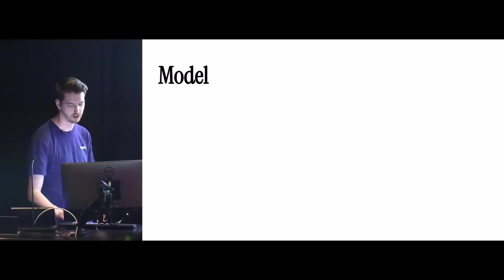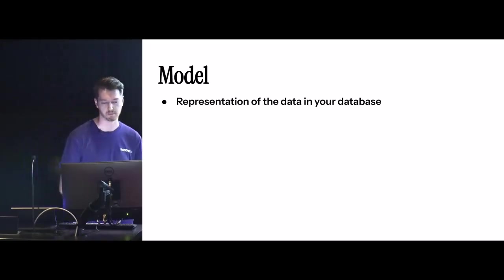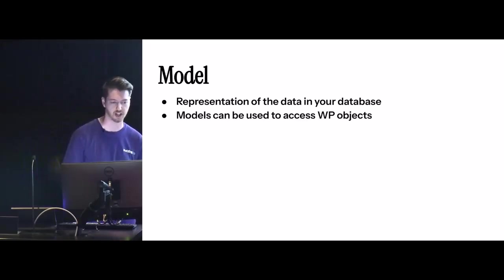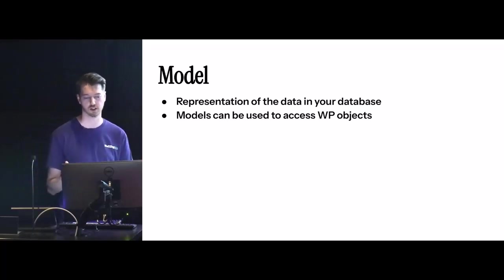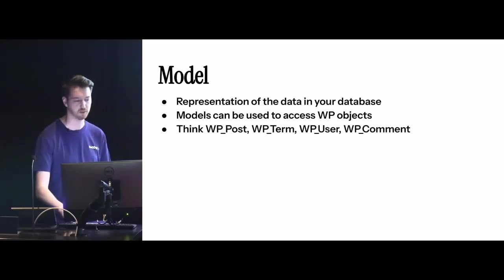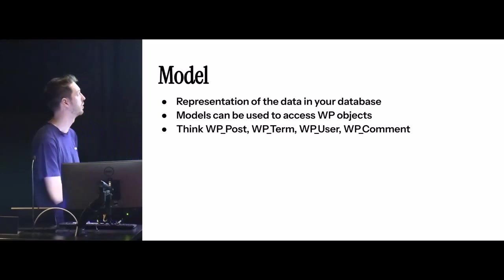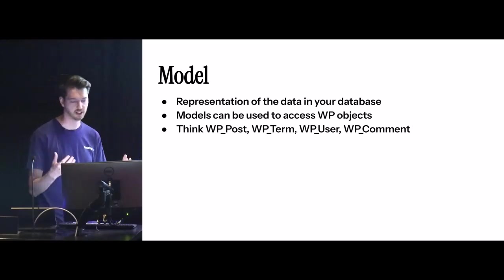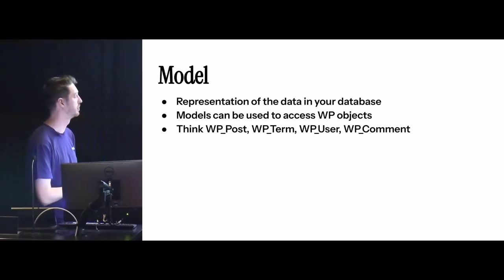In a traditional application, the M is for Model, which is the representation of the data, usually in your database. In the context of WordPress and our projects, we generally think of this as representing WordPress objects. You'll be familiar with some of these classes in WordPress: Posts, Terms, Users, Comments — all of these are WordPress objects, and we think of these as the models that are built into WordPress. These models correlate to data that's in the database.